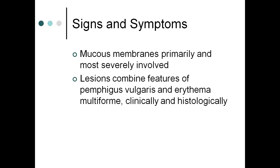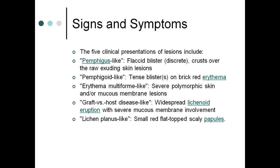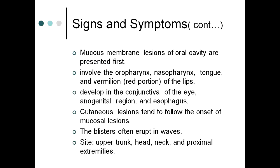Signs and symptoms: mucous membranes are primarily and most severely involved. Lesions combine features of pemphigus vulgaris and erythema multiforme. The five clinical presentations include: flaccid blisters like pemphigus; tense blisters like pemphigoid; erythema multiforme-like targetoid lesions; graft-versus-host disease-like lichenoid eruption; and lichen planus-like small red flat-topped scaly papules.